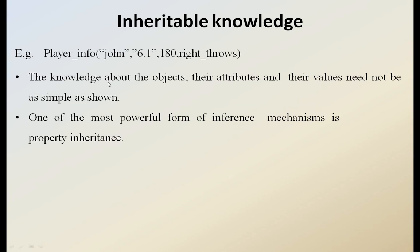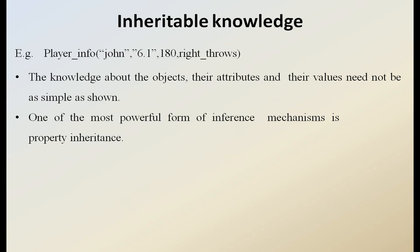The same thing can be represented in the inheritable knowledge as player_info, where the first row is John: the name of the player is John, height is 6.1, weight is 180, and bat throws is right-handed throw — represented as right_throws.